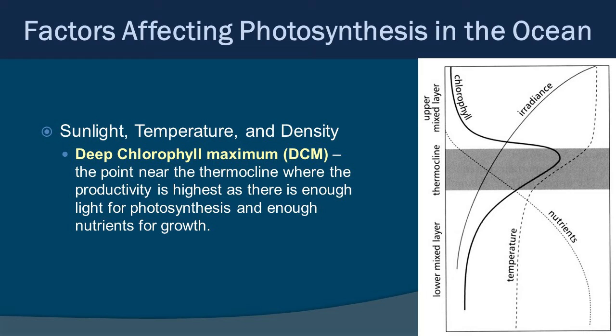It's called the deep chlorophyll maximum, and you can see it on the graph on the right. You can see nutrient levels increase as you go deeper, and irradiance — essentially sunlight — increase as you go towards the surface. The chlorophyll line gets really high around the thermocline. That's where the balance between access to nutrients and access to sunlight occurs.